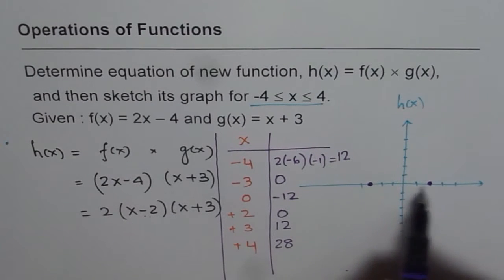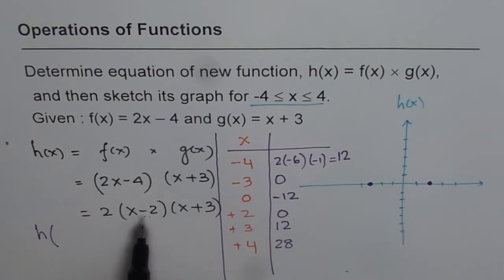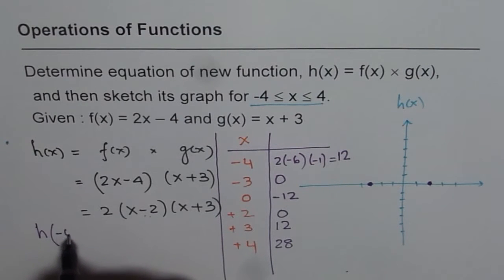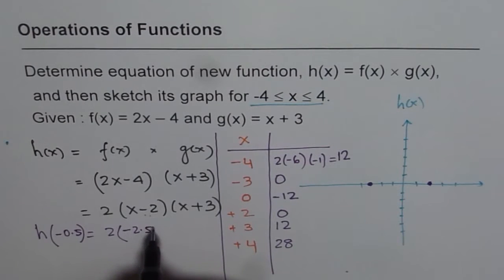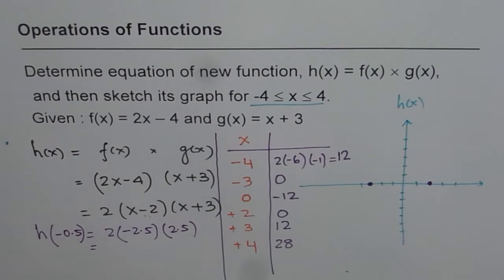Minimum will be midway between these two. So midway between them is 2 minus 3 which is minus 1, half of that. So half of minus 1 is minus 0.5. So h of minus 0.5 will be 2 times, if I write minus 0.5 I get minus 2.5 times here I get 2.5. Let me use calculator. So you say 2.5 times 2.5 times 2. So with a negative sign it gives minus 12.5. So minus 12.5 is our minimum.